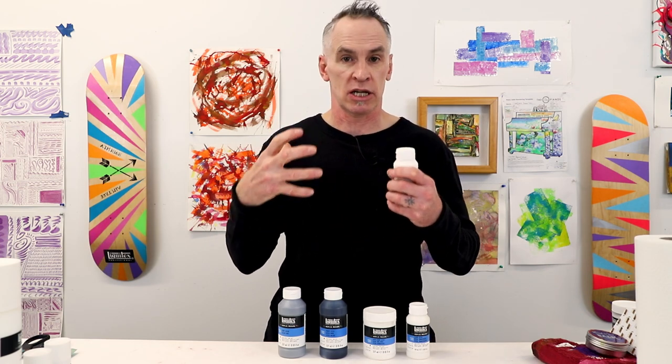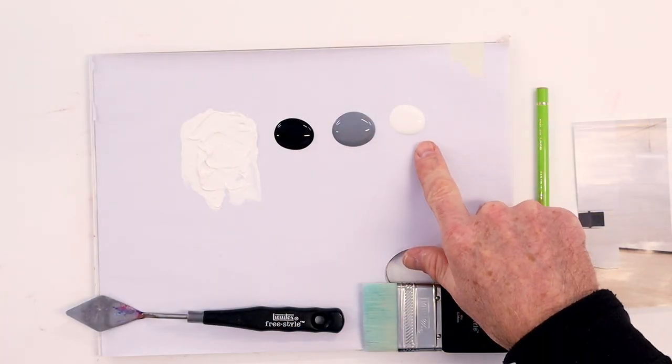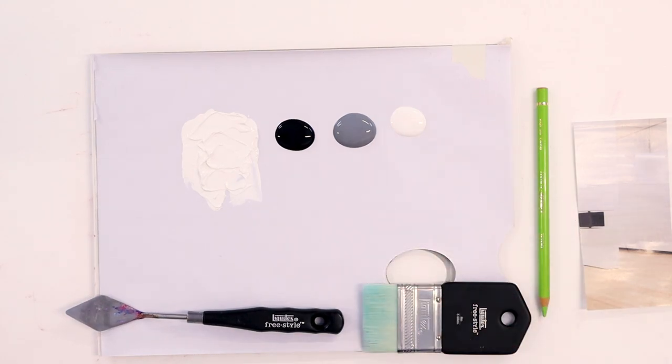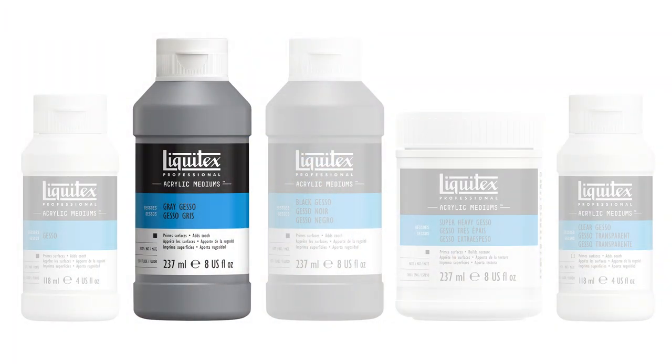That's our white gesso, and this can be mixed with any color from your Liquitex range if you want to tint it. If you don't want to do that, we've got that in a gray variety as well.